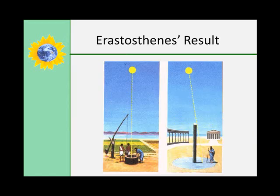He obtained a value of 46,250 kilometers, or 28,738 miles, for the circumference, which is very close to the real 40,000 kilometers, or 24,854 miles, circumference. So, 2,000 years ago, he was pretty darn good.